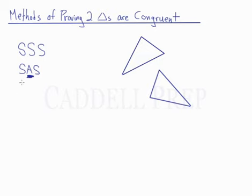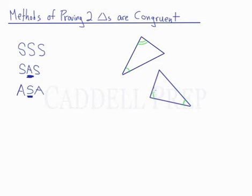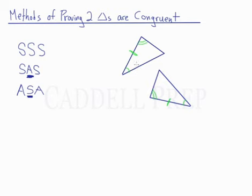The next method is angle, side, angle — ASA. Just like the angle in SAS had to be between the two sides, this side has to be between the two angles. So, let's say we can prove that this angle is congruent to this angle, and this angle is congruent to this angle. The side we need has to be between these two angles. If we can prove that pair of angles and the included side are congruent, then we know these two triangles are entirely congruent to each other.